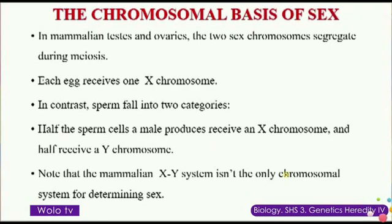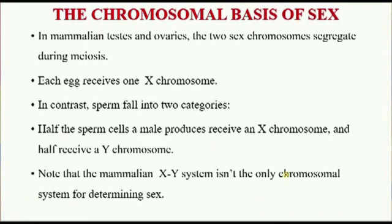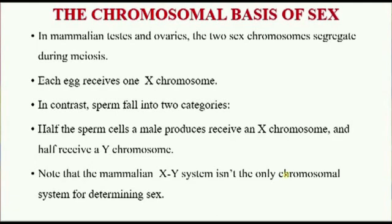In mammalian testes and ovaries, the two sex chromosomes segregate during meiosis. When we have the 23 pairs, the first meiotic division will separate these homologues, which are now in the sister chromatid stage, and the second meiotic division will separate sister chromatids as well.